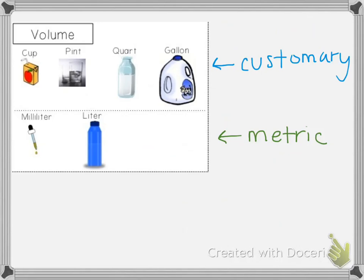When we're measuring liquid volume, we're going to use things like measuring cups. But again, we can use these benchmarks to help us make an estimate. So if we needed to know about how much hot chocolate a mug could hold, a mug isn't going to hold quite as much as a tall glass of water — it's going to be closer to the juice box. So that would be about one cup of hot chocolate.